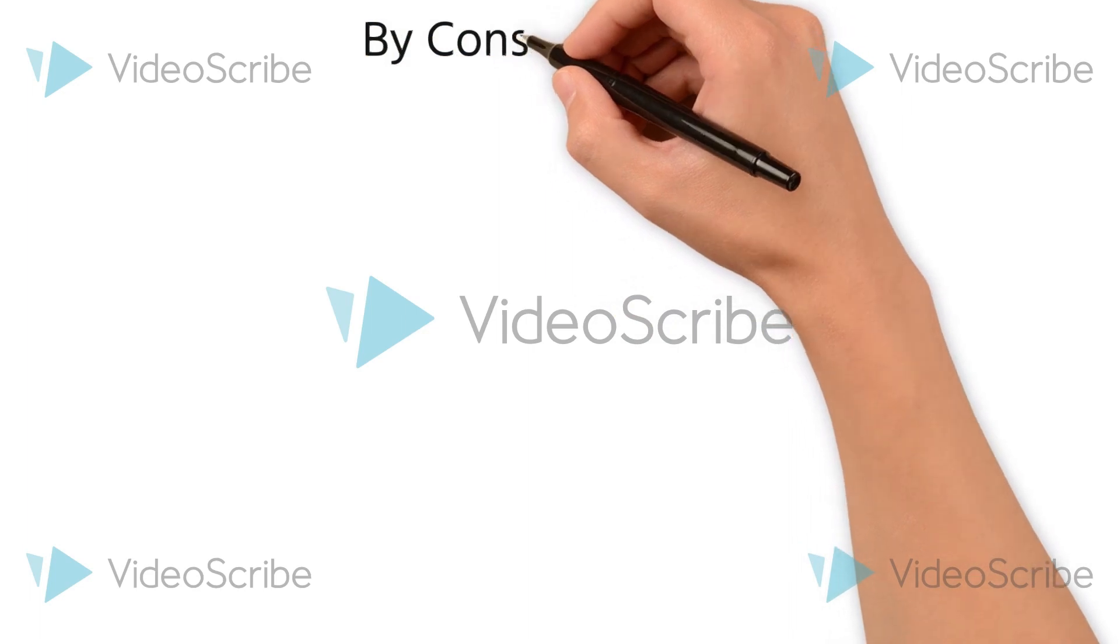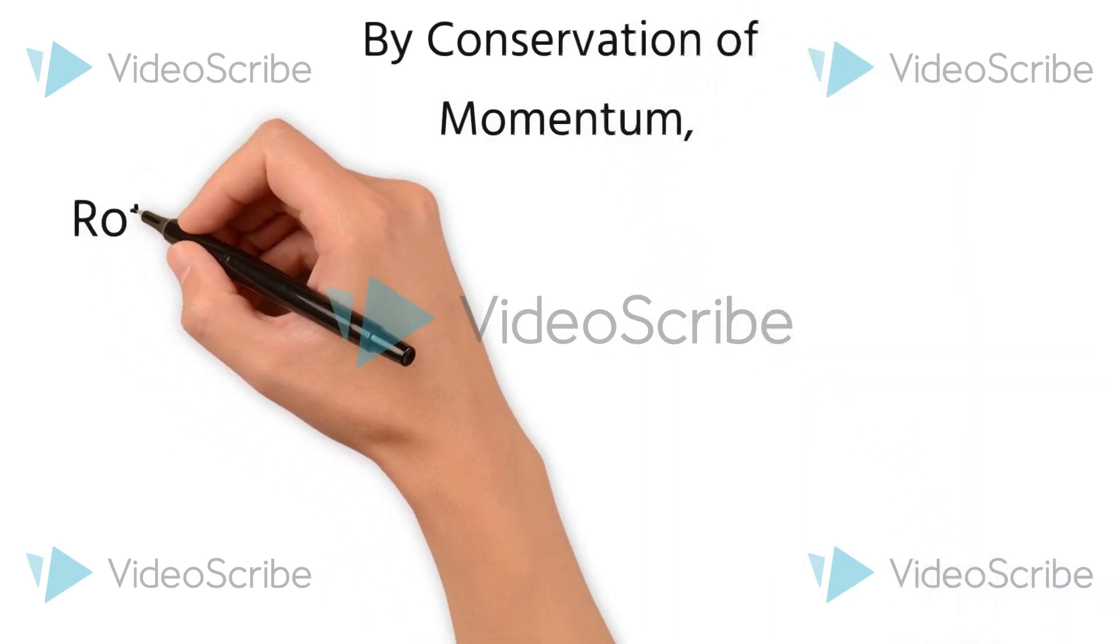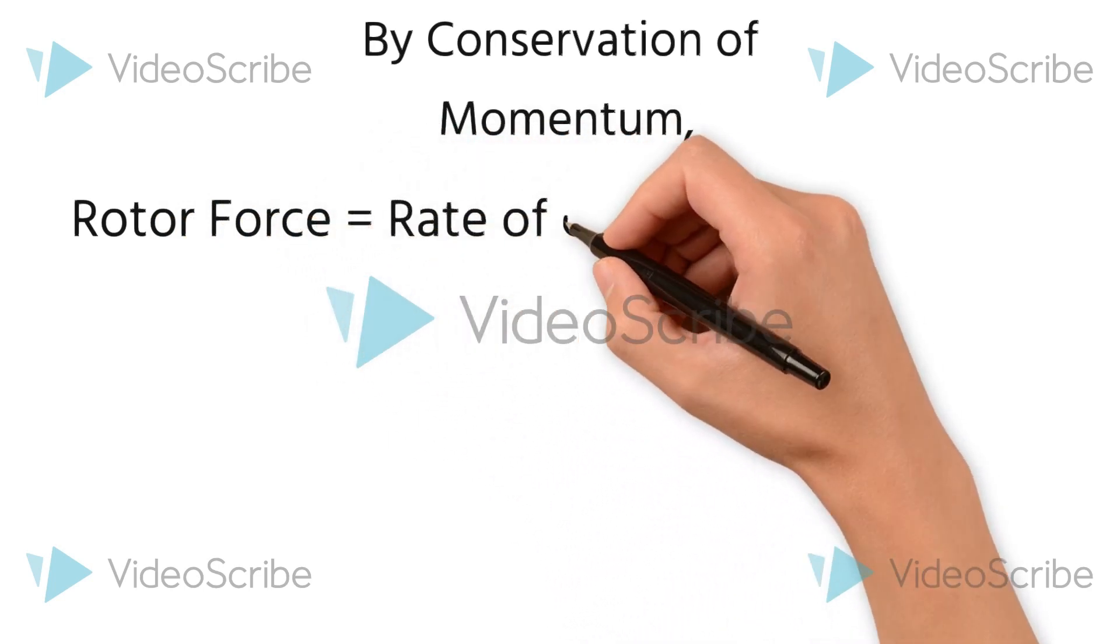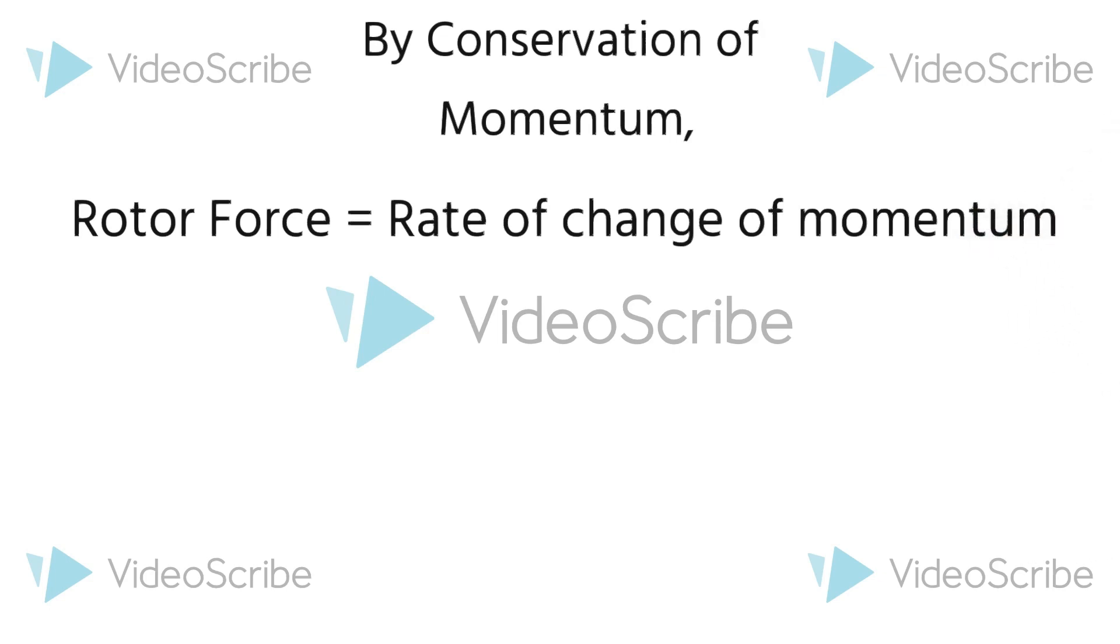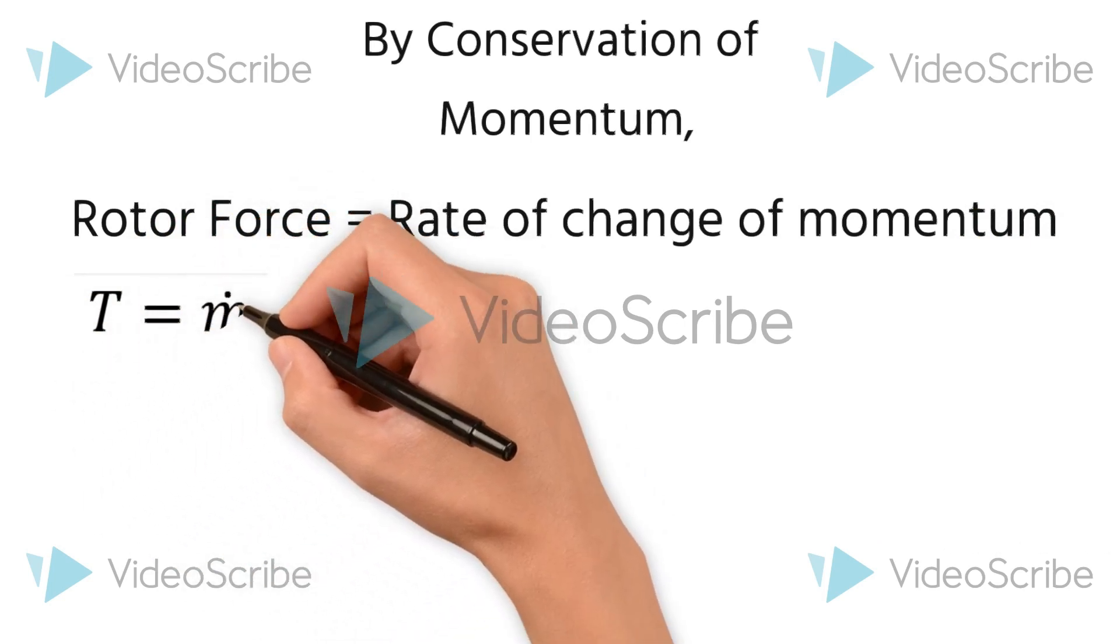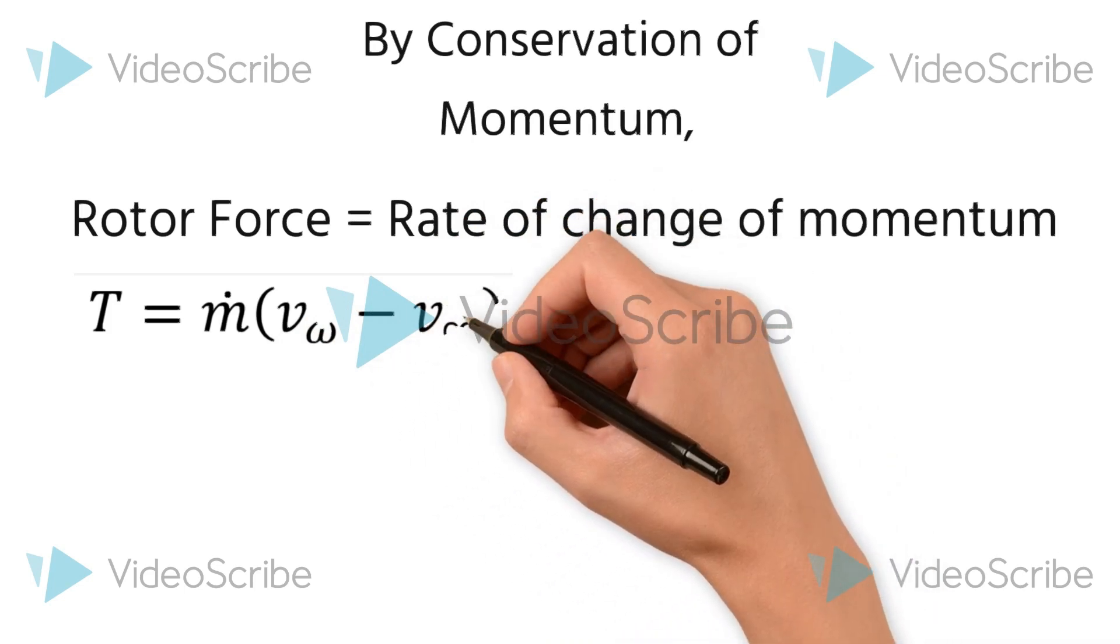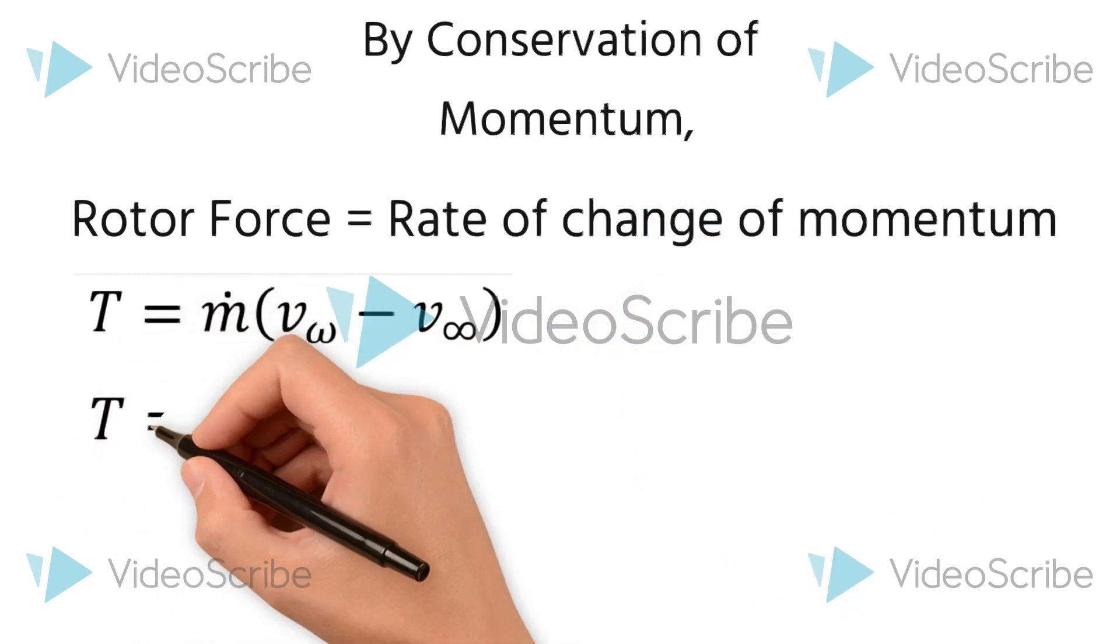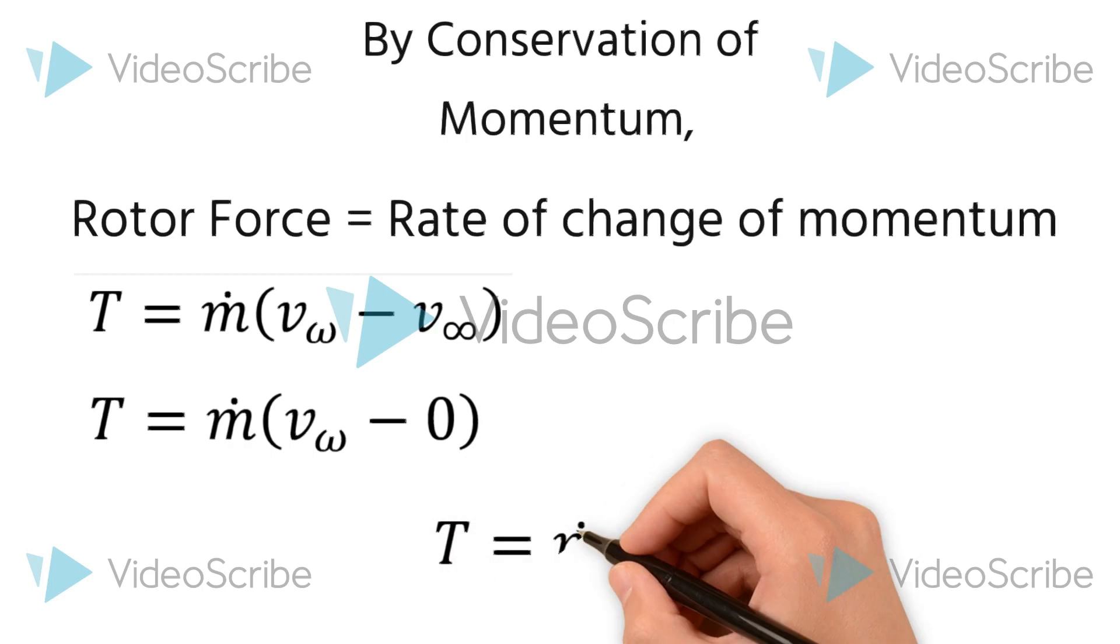The second main equation we are using is the conservation of momentum. Conservation of momentum is nothing but Newton's second law, which says that the rotor force or thrust is equal to the rate of change of momentum. As we know, the thrust is denoted by T, which will be equal to the mass flux and the rate of change of velocity—that is, the velocity at the wake region minus the velocity at the upstream. As the velocity far upstream is zero, the thrust T is equal to mass flux into the wake velocity.